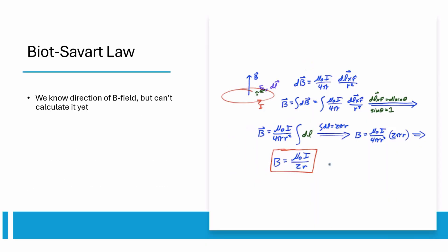We know B-fields form loops around wires, but how do you actually calculate them? One way is to use the Biot-Savart law, which shows that B-field is a function of current, length, distance from wire, and angle between current and distance from wire.